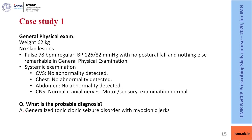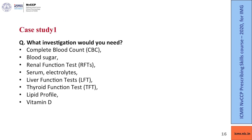The probable diagnosis is generalized tonic-clonic seizure with myoclonic jerks. To investigate this case and find causes of seizures, we need a complete blood count, blood sugar, renal function test, serum electrolytes, liver function test, thyroid function test, lipid profile and vitamin levels.